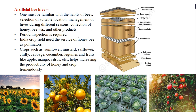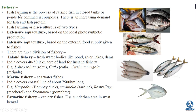Periodic inspection of hives is required. Indian crop fields benefit from the services of honey bees as pollinators. Crops such as sunflower, mustard, safflower, chili, cabbage, cucumber, legumes, and fruits like apple, mango, and citrus benefit tremendously from bee pollination. It is a mutually beneficial relationship - honey bees help in pollinating plants, and these plants in turn help increase the productivity of honey.